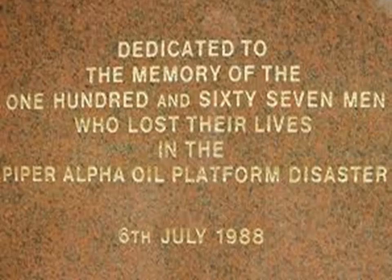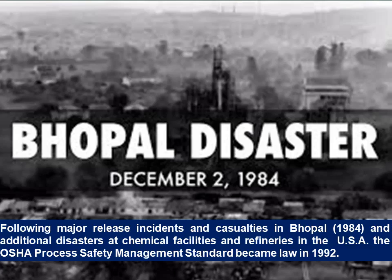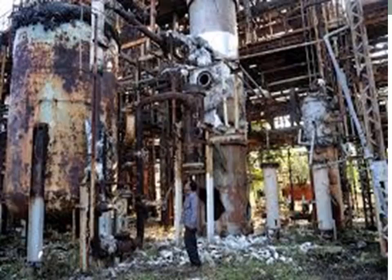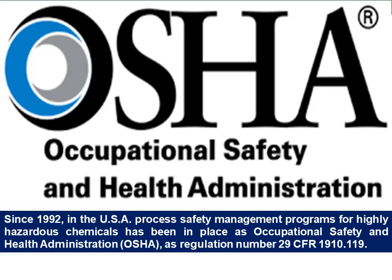Following major release incidents and casualties in Bhopal in 1984, and additional disasters at chemical facilities and refineries in the USA, the OSHA process safety management standard became law in 1992. Since 1992, in the USA, process safety management programs for highly hazardous chemicals has been in place as Occupational Safety and Health Administration (OSHA) Regulation No. 29 CFR 1910.119.